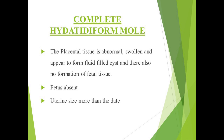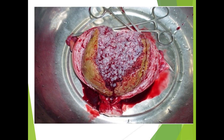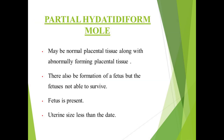In the complete mole, the fetus is absent and the uterine size appears larger than the date of gestation. This is the picture of the complete hydatidiform mole where you can see no fetal tissue — the entire pregnancy is depicted by a bunch of grape-like appearance.